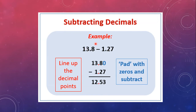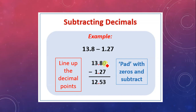The second subtraction example is 13.8 minus 1.27. Since 13.8 has one decimal place and 1.27 has two, we add a zero to make them equal: 13.80 minus 1.27. Now subtract: 0 minus 7 is not possible, so borrow — making it 10. 10 minus 7 is 3. The 8 becomes 7; 7 minus 2 is 5. Then 3 minus 1 is 2, and 1 minus 0 is 1. Answer is 12.53.